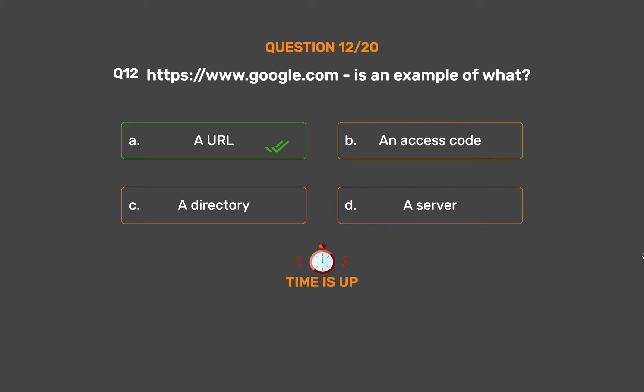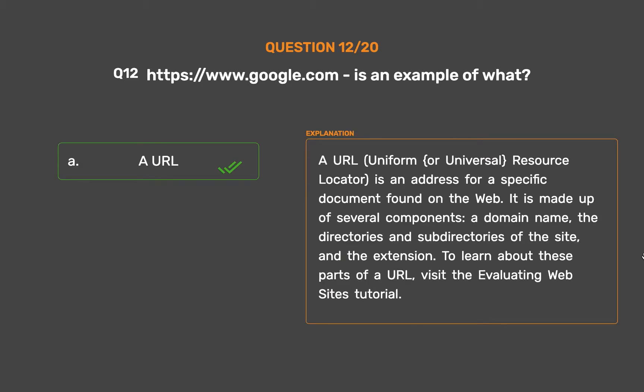The correct answer is Option A: A URL — Uniform Resource Locator — is an address for a specific document found on the web. It is made up of several components: a domain name, the directories and subdirectories of the site, and the extension. To learn about these parts of a URL, visit the Evaluating Websites Tutorial.